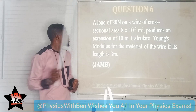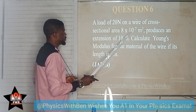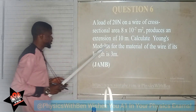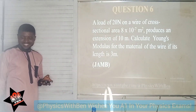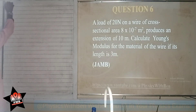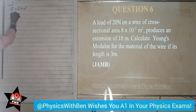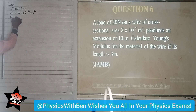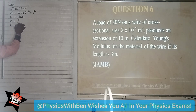Question number 6 reads: A load of 20N on a wire of cross-sectional area 8×10⁻⁷ metres squared produces an extension of 10mm. Calculate the Young's modulus for the material of the wire if its original length is 3 meters. So for question number 6, we have force given to be 20N, cross-sectional area = 8×10⁻⁷ m², extension E = 10mm, and the original length of the wire is given to be 3 meters.